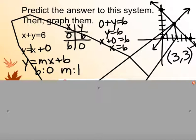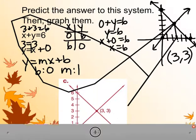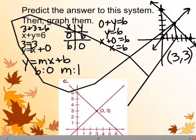So my intersection is 3 comma 3. Does that work? 3 plus 3 equals 6, and 3 equals 3 — yes it does. We can see the intersection at 3 comma 3.